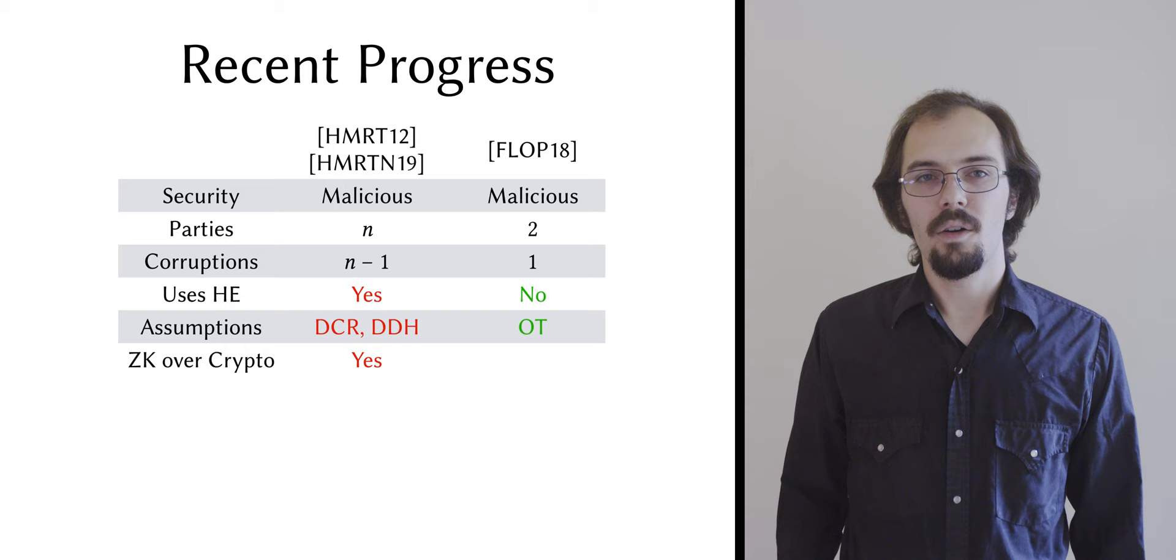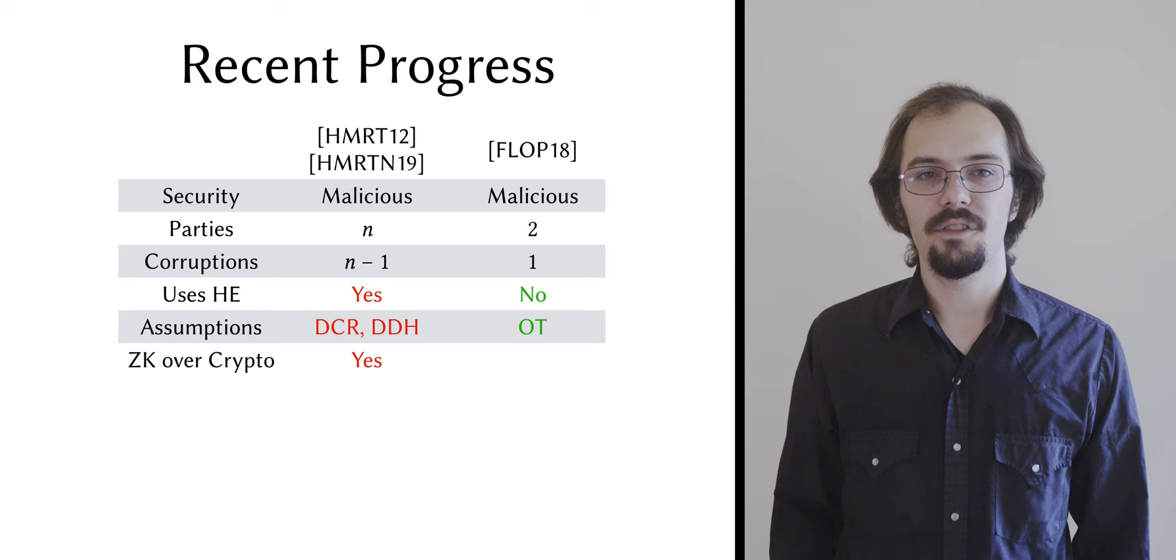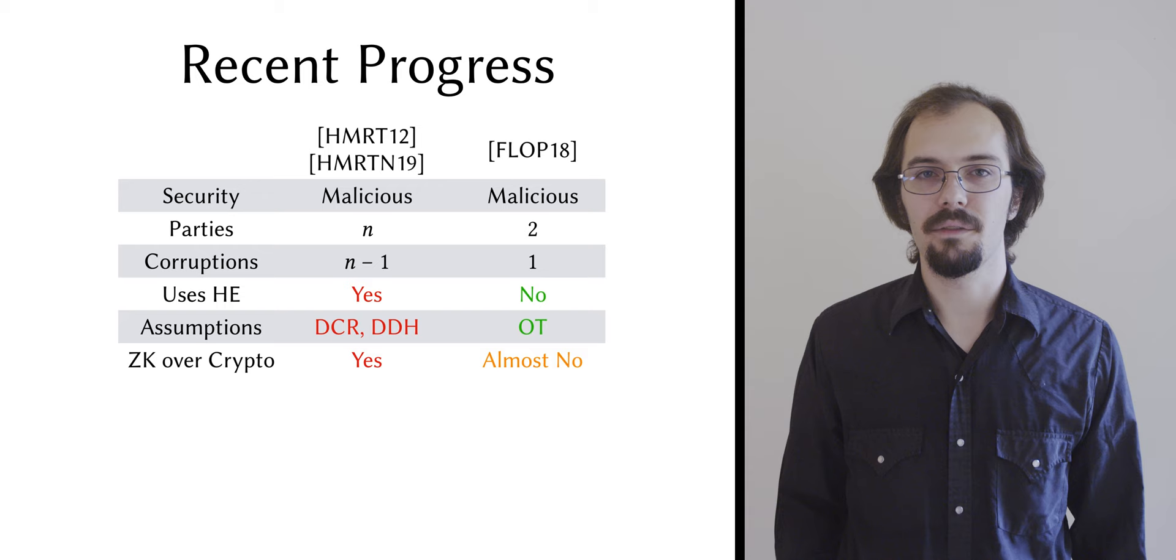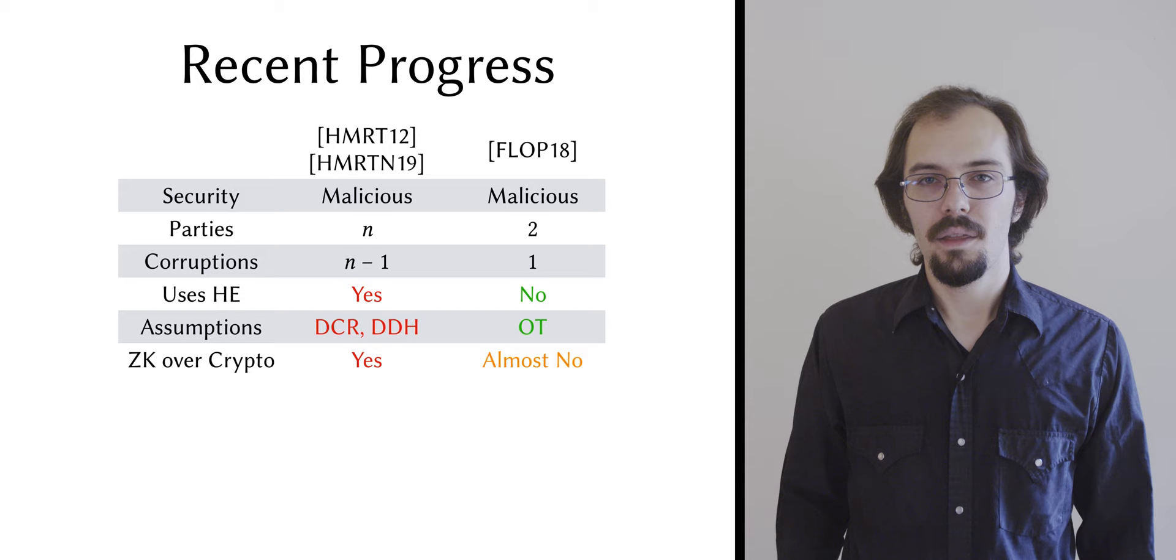Rather than taking the GMW-style approach of proving each step correct as it occurs, the authors instead introduce what they call a proof of honesty—a single proof that's run at the end only if the bioprimality test passes, which verifies a few key algebraic relationships among values used in the protocol. They do also evaluate a symmetric key relation, but this can somewhat easily be removed, so I won't count it against them.